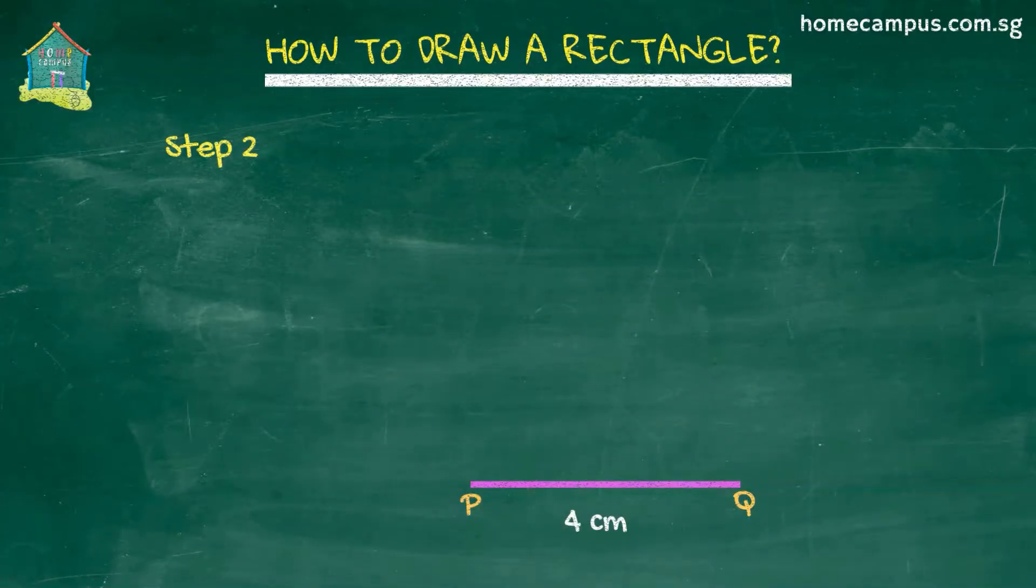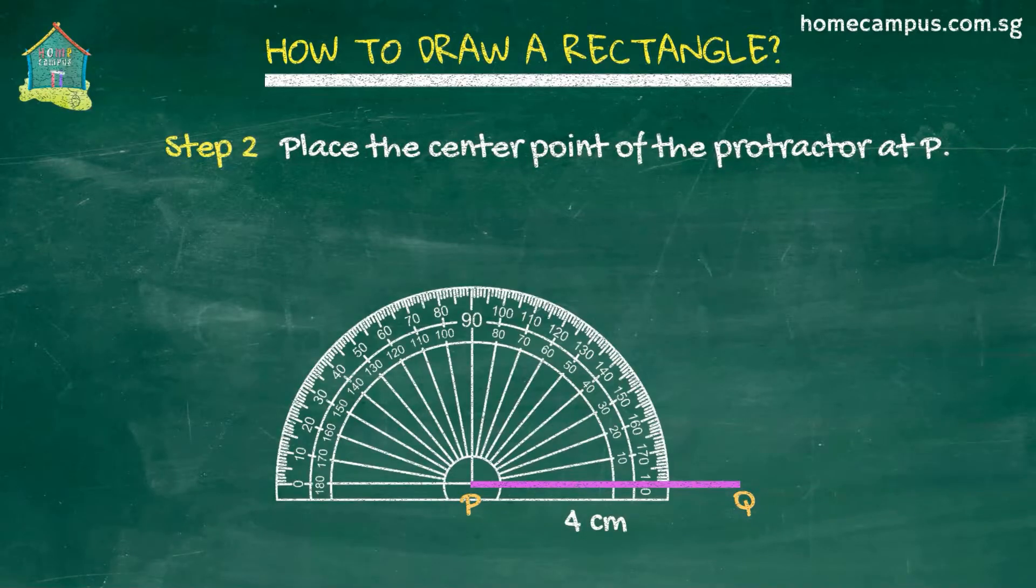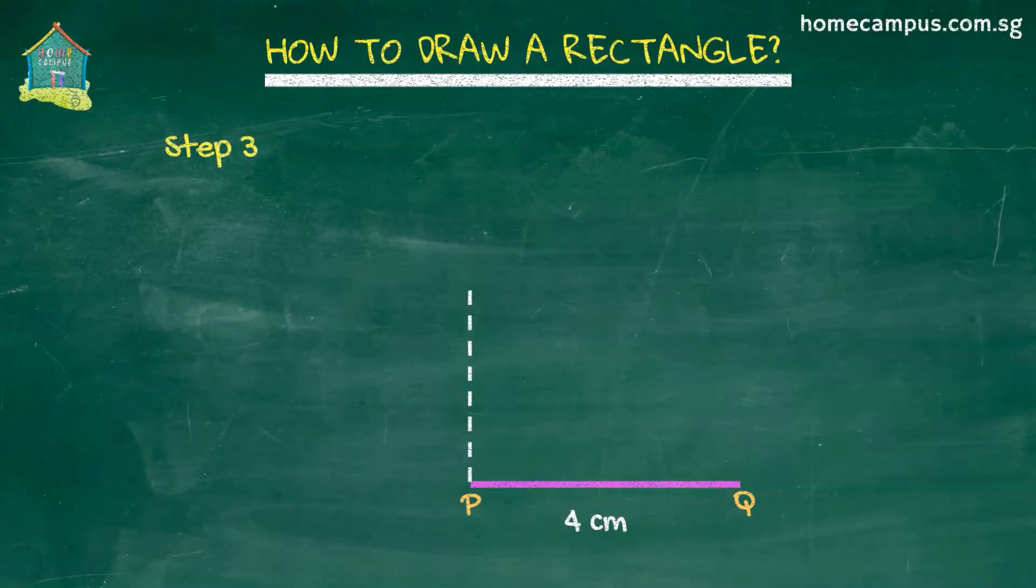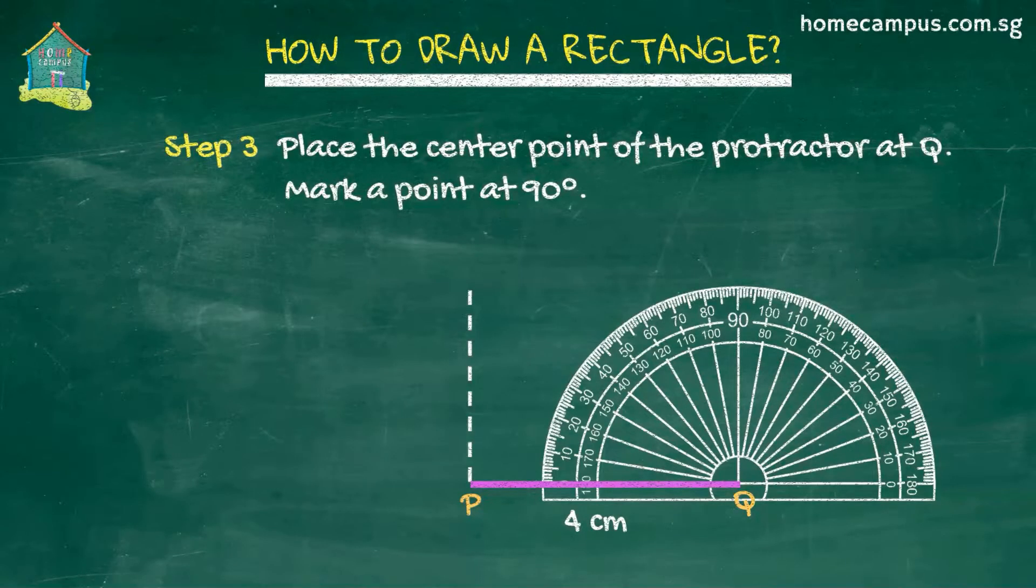Next, we place the center point of the protractor at P and mark a point at 90 degrees. Then, we do the same by placing the center point of the protractor at Q.